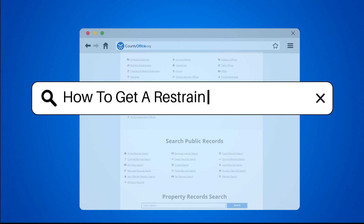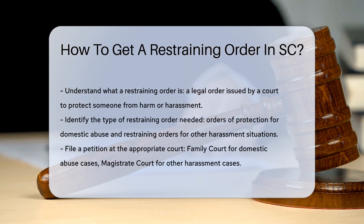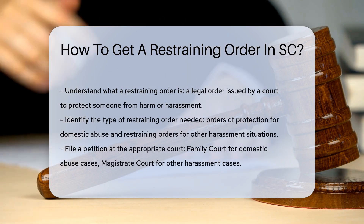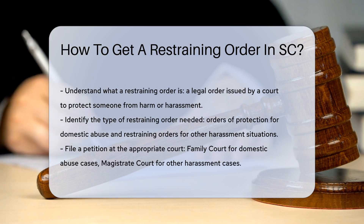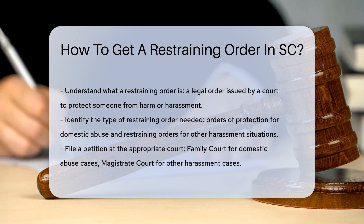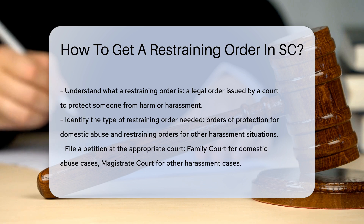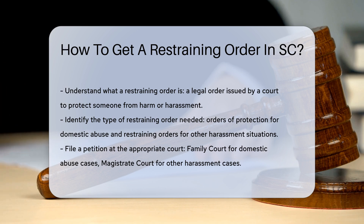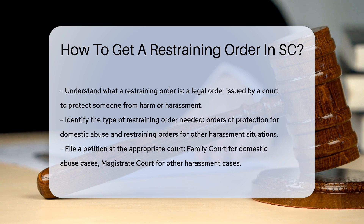How to get a restraining order in SC. First, understand what a restraining order is — it is a legal order issued by a court to protect someone from harm or harassment. In South Carolina, there are specific steps to obtain one. You must identify the type of restraining order needed. South Carolina offers orders of protection for cases involving domestic abuse, and restraining orders for other harassment situations.